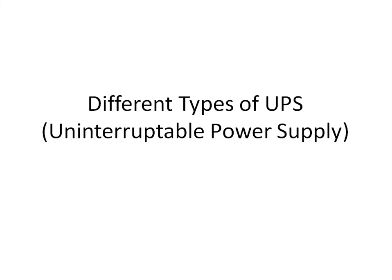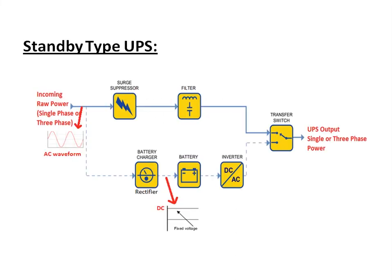The UPS will also provide over-voltage and under-voltage protection to the load. This is the standby type UPS block diagram, commonly used in homes and offices. Whenever incoming power is available, it is directly fed to the output through a surge suppressor and filter, and at the same time the input is used for charging the battery through the rectifier. Whenever power failure occurs, the UPS detects this and the transfer switch connects to the inverter.